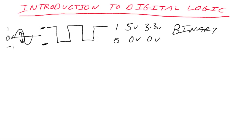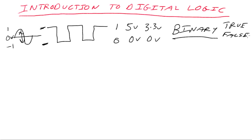Digital is still analog in terms of the actual waveform, but the way it's interpreted and represented, it's only in binary form like this. It could be called one or zero, also called true or false. Any name you want to give it, it doesn't matter. It represents two different logic states.